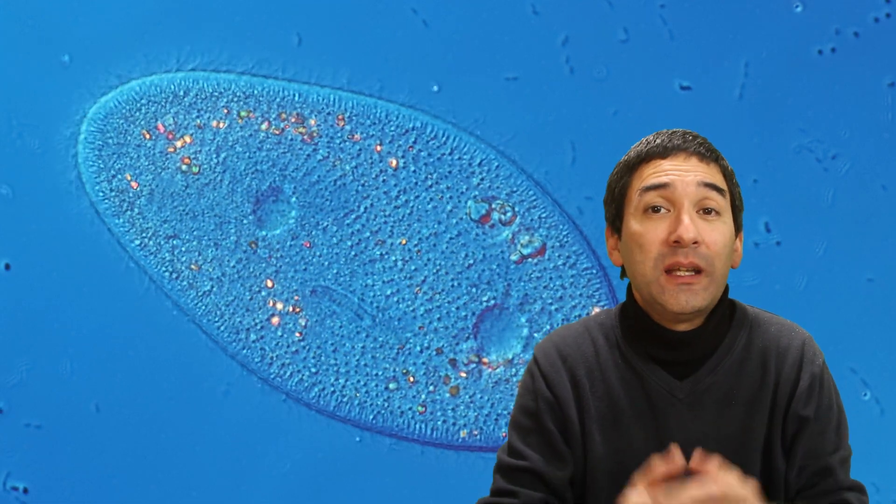So the cytostome, that is essentially the mouth of the cell, and from there, the bacteria are then digested, and the ciliate gets the nutrients that it needs for growth and for energy.